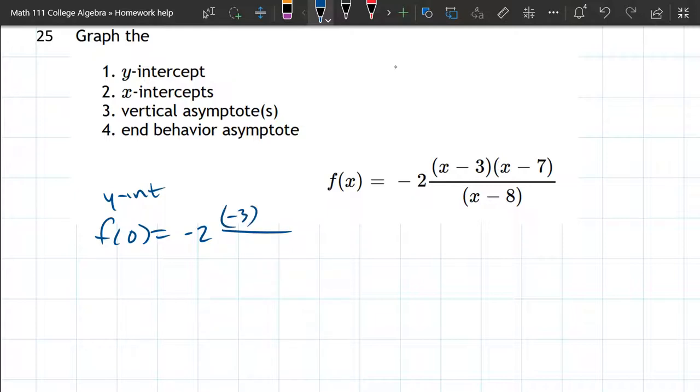zero minus three is minus three, zero minus seven is minus seven, over minus eight. And we can cancel the two and then negative eight to a four. Three times seven is 21.